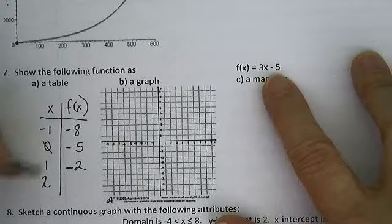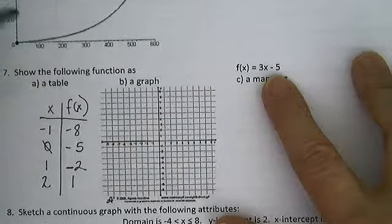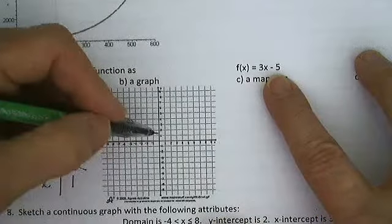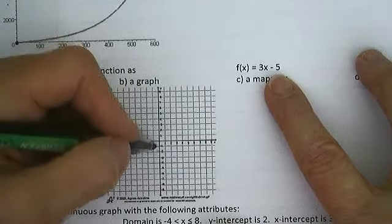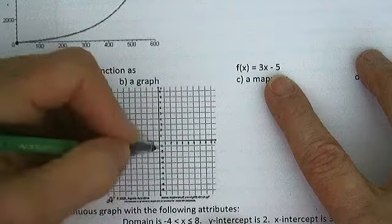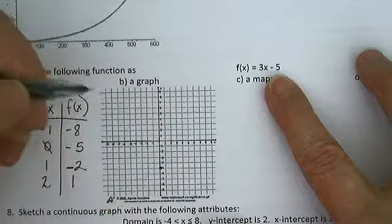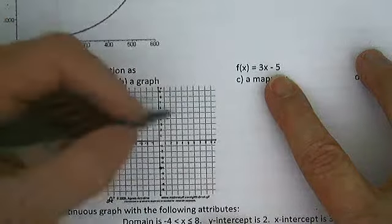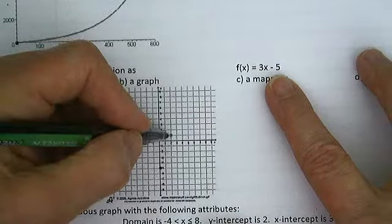As a graph, if x is 0, my output is negative 5. 1, 2, 3, 4, 5. And if x is 2, my output is 1.